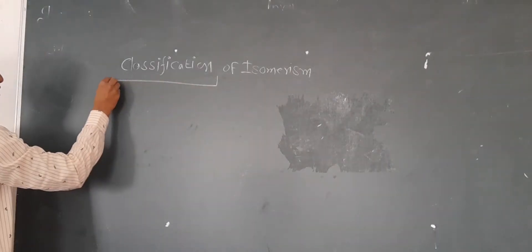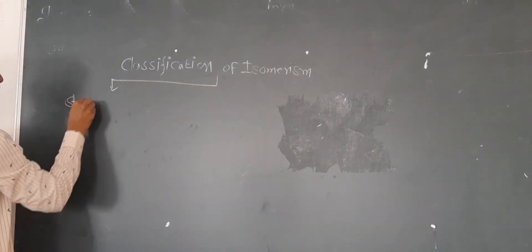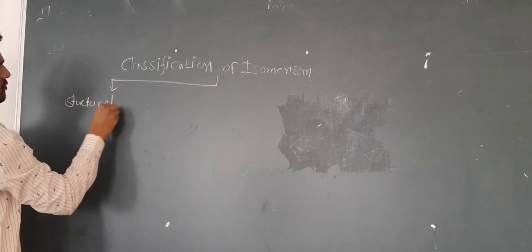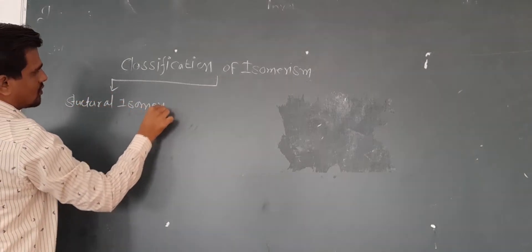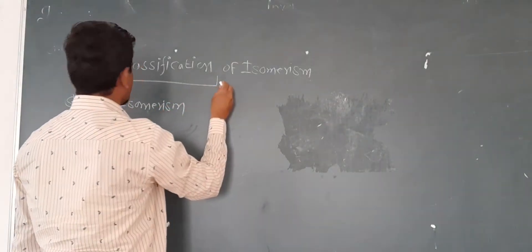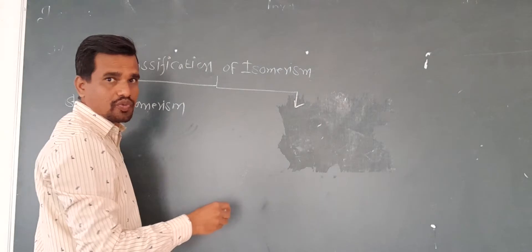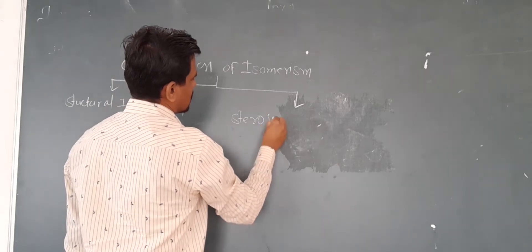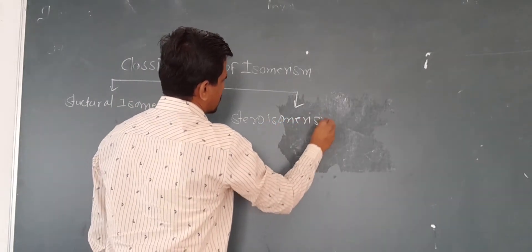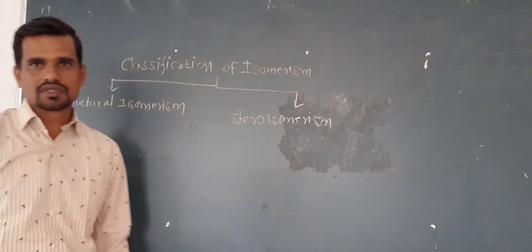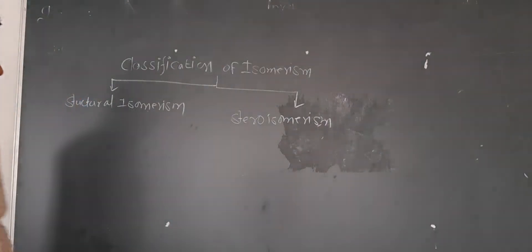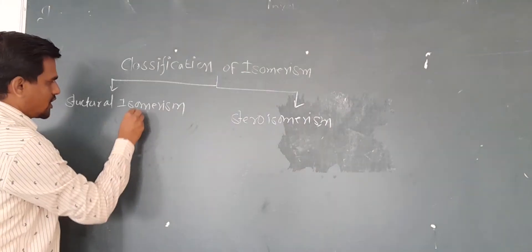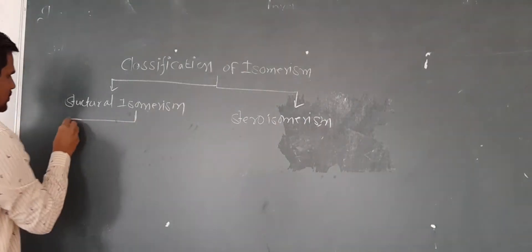So isomerism is classified into two main types. The first is structural isomerism and the second is stereoisomerism. So these are the two types in which isomerism is classified. The structural isomerism is further classified into some subtypes.